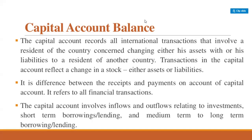The capital account shows the net income generated in the foreign sector. In the current account, receipts from exports of goods and services and unilateral receipts are entered as credit or positive items, and payments for imports of goods or services and unilateral items are entered as debit or negative items. The net value of credit and debit balance is the balance of the current account. A surplus arises when credit items are more than debit items, indicating net inflow of foreign exchange. A deficit arises when foreign exchange receipts fall short of payments, indicating net outflow of foreign exchange.